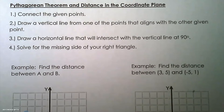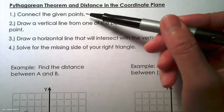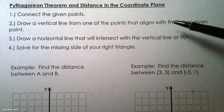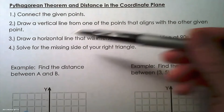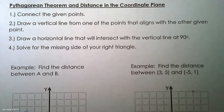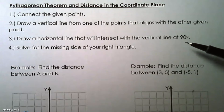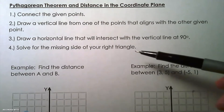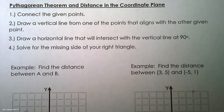The steps for that process are: connect the given points, draw a vertical line from one of the points that aligns with the other given point, then draw a horizontal line that will intersect with that vertical line at a 90-degree angle, which creates a right triangle. Then we solve for the missing side of the right triangle — in all these examples we will be solving for the hypotenuse.